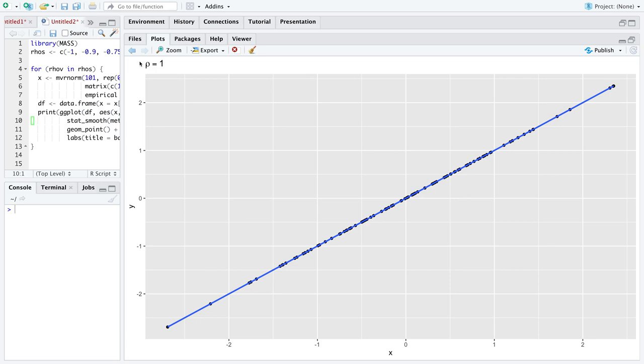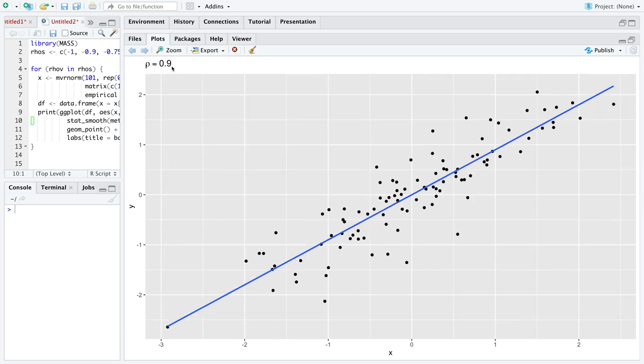Let's consider the next one, where rho is equal to 0.9. Notice now that there's some separation between the line and all of the points. But for the most part, many of the points fall very closely to this simple linear regression line. So this is a made-up but reasonable depiction of the correlation equal to 0.9.